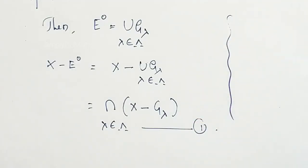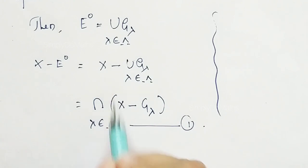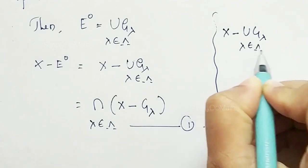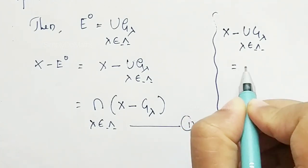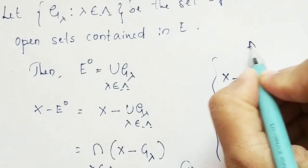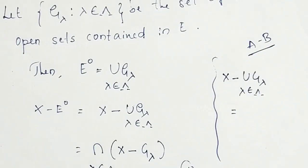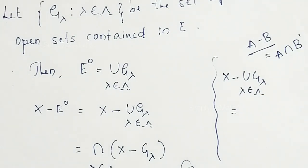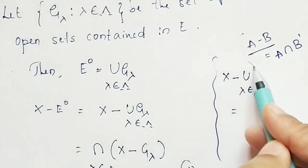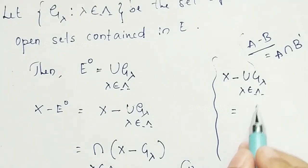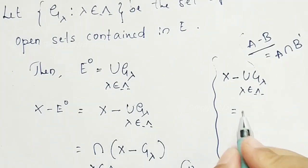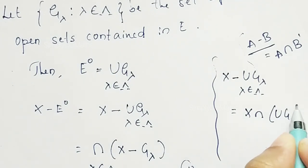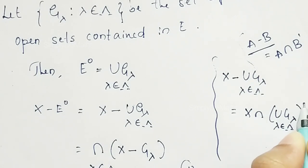Otherwise, you can use the basic idea to find the value of X minus union of G_lambda, where lambda belongs to the index set. This is in the form A minus B. A minus B is nothing but A intersection B complement. So by using this idea, X minus union of G_lambda, provided lambda belongs to the index set, can be written as X intersection (union of G_lambda) complement.